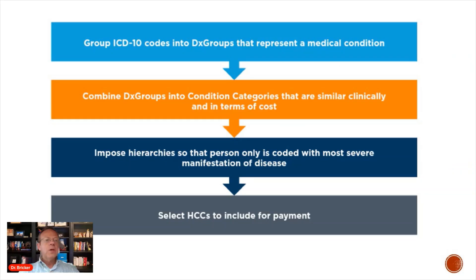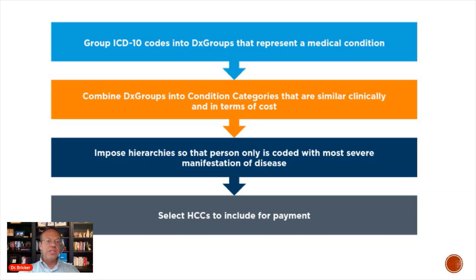Whenever a patient is seen, the doctor, nurse, or physician's assistant will put in an ICD-10 diagnosis code. There are over 60,000 ICD-10 diagnosis codes ranging from diabetes to COPD to eczema to cancer to depression. Those ICD-10 codes are then grouped into diagnosis groups, and those diagnosis groups are then combined into condition categories.